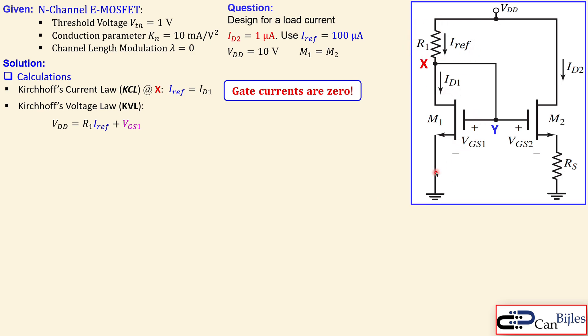VGS1, which is shown here. But we can also make a loop here, so VGS1 is equal to VGS2 plus RS times the ID2.